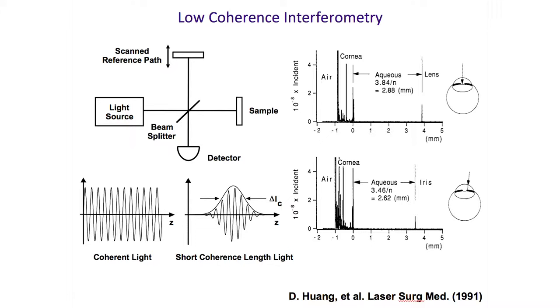OCT got started in 1990 when Professor Jim Fujimoto asked me to build an interferometer to measure the thickness of the cornea and retina. Low coherence interferometry is the basis of the high depth resolution of OCT. In our interferometer experiments, it soon became obvious to me that measuring thickness is a trivial application for this technique. A much more exciting use would be to obtain cross-sectional images of the retina and see its layered microstructure.